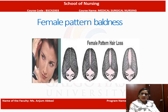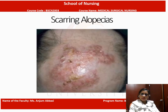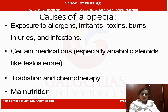Next is the female pattern of baldness. In the female pattern, hair thinning occurs in particular areas, often associated with scarring formation. Next we look at the causes of alopecia.